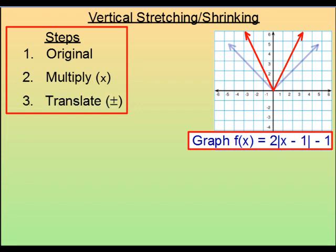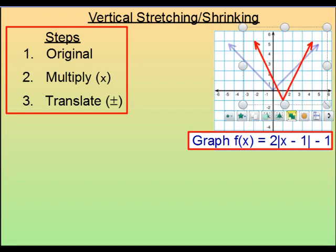Now that we've done that, we can go ahead and translate. Move it 1 unit horizontally, 1 unit vertically. So this graph now you'll move 1 unit to the right and then 1 unit down. That finishes that transformation.